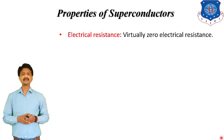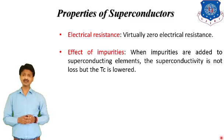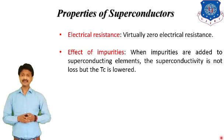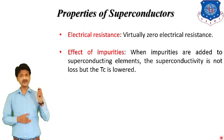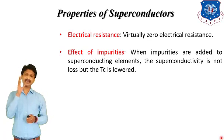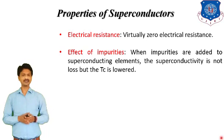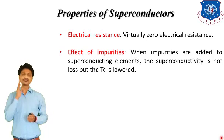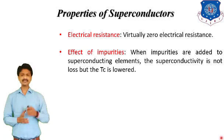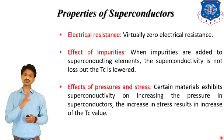The second property is the effect of impurities. When impurities are added to a superconducting element, the superconductivity property is not lost, but the value of the critical temperature is lowered. So if we add any impurity to a superconducting material, it retains superconductivity but its critical temperature becomes lower.